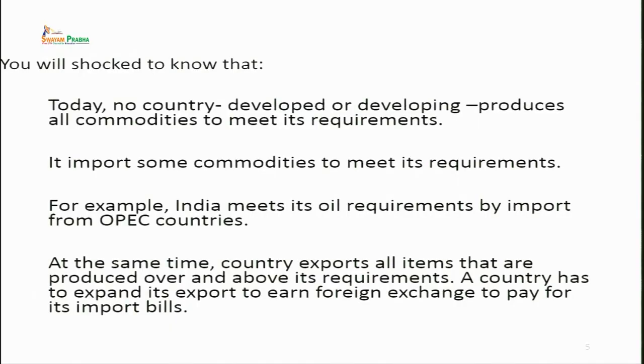Today, no country — developed or developing — produces all commodities within their own country, because they prefer importing over local production. For example, India meets its oil requirement by importing from OPEC countries. OPEC stands for Organization of the Petroleum Exporting Countries — an intergovernmental cartel of 15 member countries including Iran, Iraq, Kuwait, Saudi Arabia, UAE, Algeria, and Angola. They help meet the oil requirements of various foreign countries, and India is one of their customers.